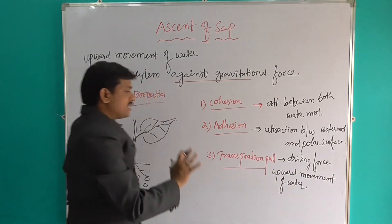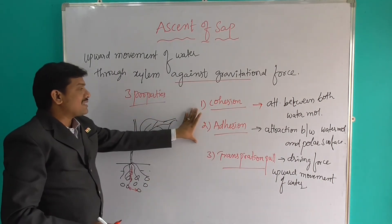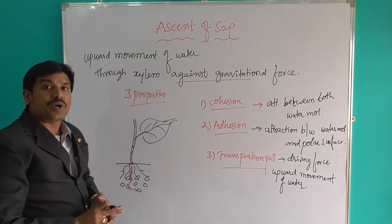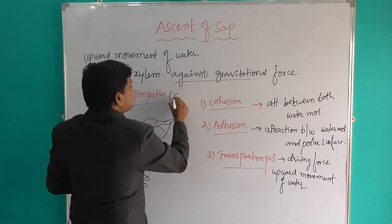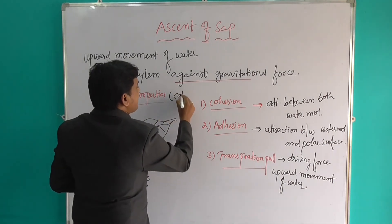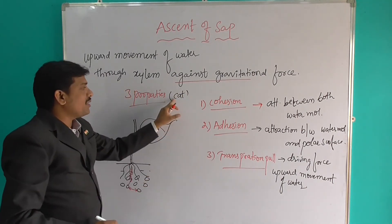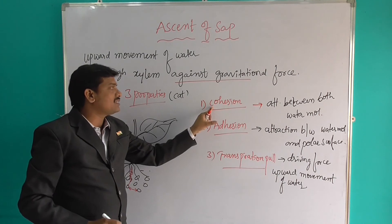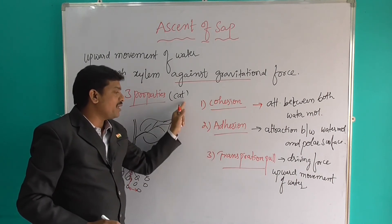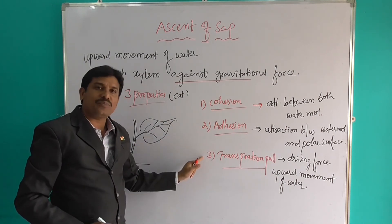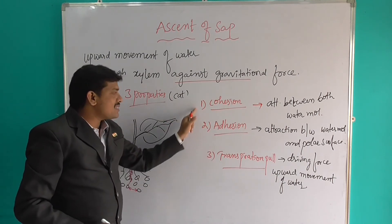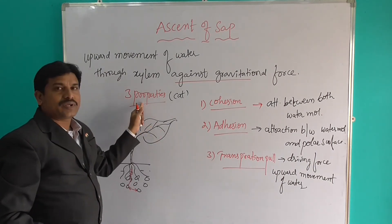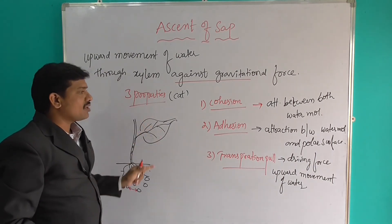So like this process, it has three properties. For understanding these three properties, I created one code — the code name is CAT: C for Cohesion, A for Adhesion, T for Transpiration pull. Very simple, we can easily understand these three properties.